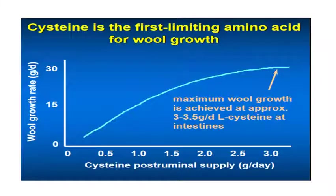Sulfur-containing amino acids are very important for wool growth, and the most important is cysteine — the first limiting amino acid for wool growth. Methionine and other sulfur-containing amino acids are also important. A graph showing cysteine post-ruminal supply (grams per day) against wool growth (grams per day) demonstrates that maximum wool growth is achieved at approximately 3 to 3.5 grams per day of L-cysteine. Cysteine is critical for wool growth and quality as a major source of sulfur-containing amino acids.